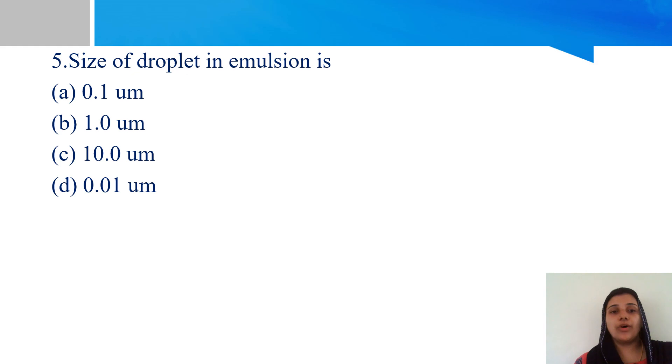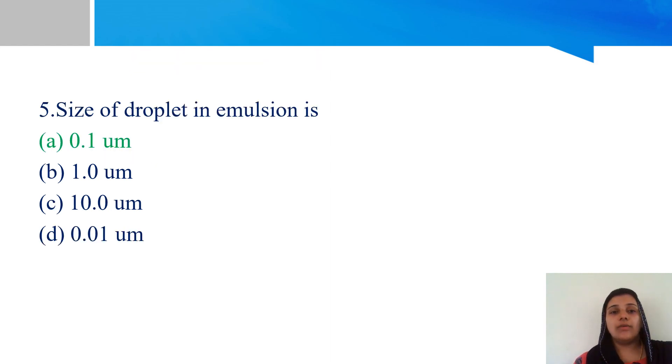Fifth question. Size of droplet in emulsion: 0.1 micrometer, 1 micrometer, 10 micrometer, 0.01 micrometer. The answer is option A, 0.1 micrometer for emulsion droplet size.